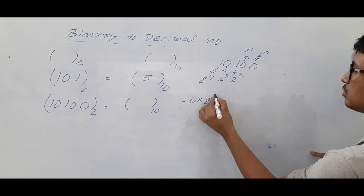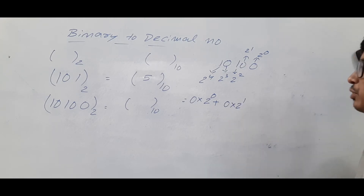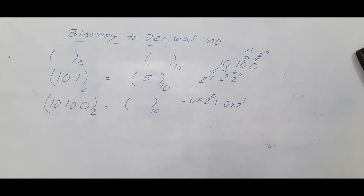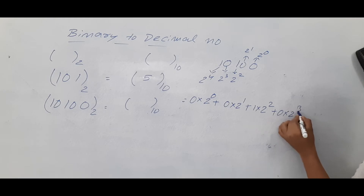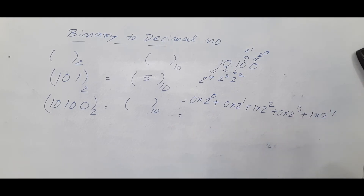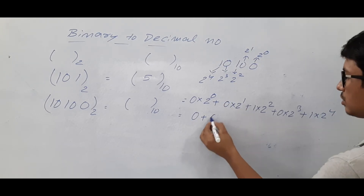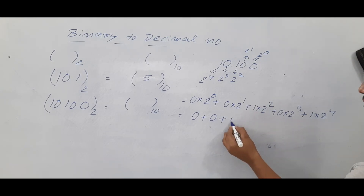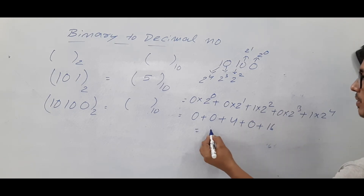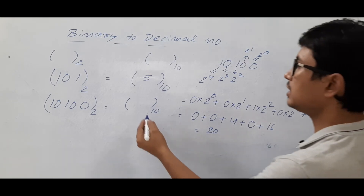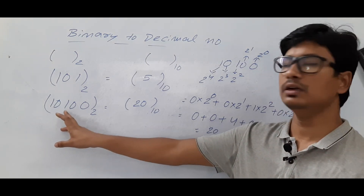Multiply each digit by its weight: 0 × 2⁰ + 0 × 2¹ + 1 × 2² + 0 × 2³ + 1 × 2⁴. That gives 0 + 0 + 4 + 0 + 16 = 20. So 20 is the equivalent decimal number for the binary number 10100.